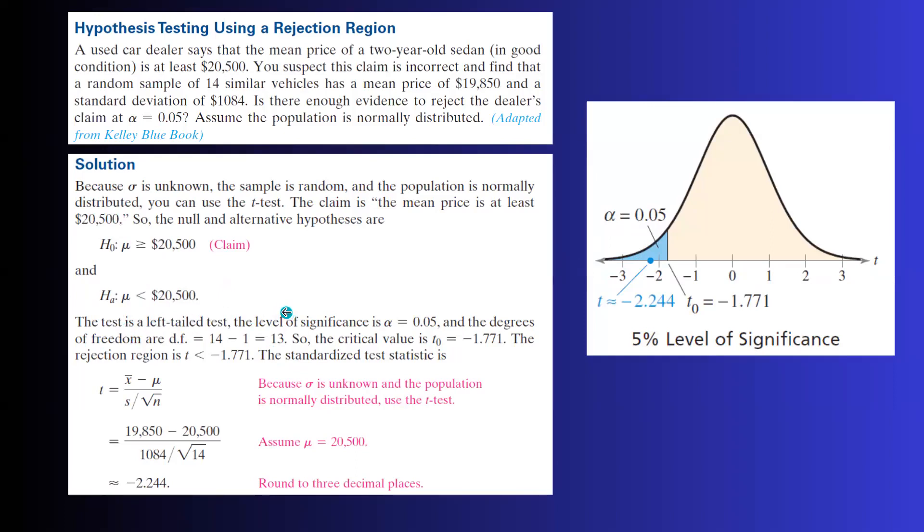The test is left-tailed. Why is that? Because your alternative hypothesis is less than. Since it's less than, it is left-tailed.